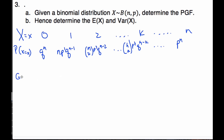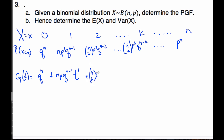To find the generating function g(t), the number of successes is the exponent on t. So it's t to the zero times q to the n, which is just q to the n, plus n·p·q to the n minus one times t to the one, plus n choose two, p squared, q to the n minus two, t squared, and so on, all the way up to the nth term, which is p to the n times t to the n.